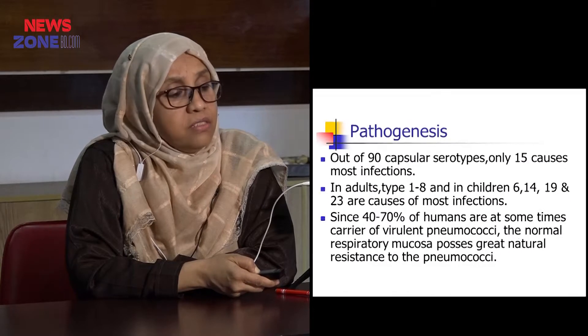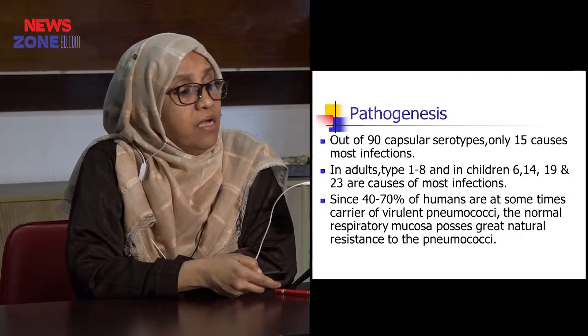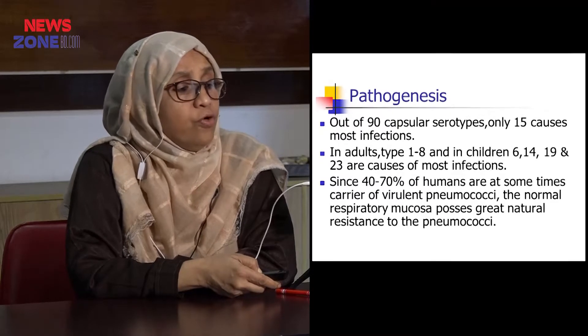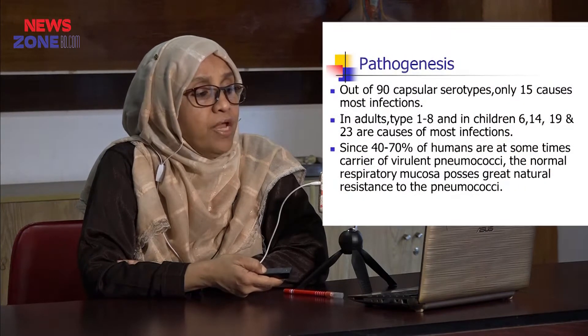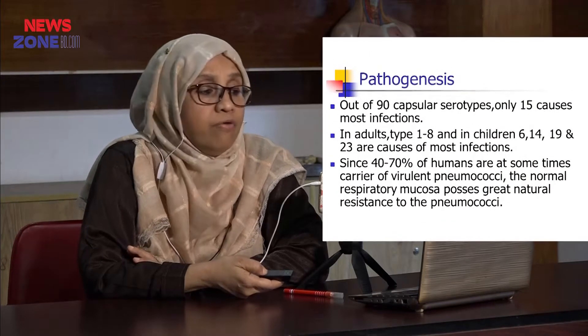Out of 90 capsular serotypes, not all of them are equally virulent — only 15 cause most infections. In adults, types 1 to 8 cause most infections; in children, types 6, 14, 19, and 23 cause most infections. Since 40 to 70 percent of humans are at some time carriers of virulent pneumococci, they can remain as transient or normal flora in the nasopharynx of some populations.